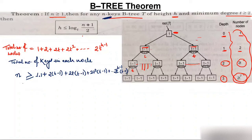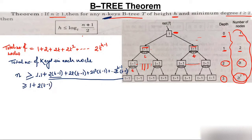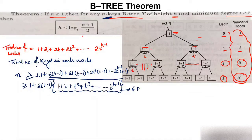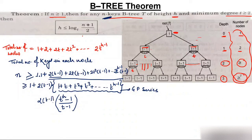This total number of keys is always less than or equal to n, because we are considering t−1 as the minimum number of elements per node, and n could be anything equal to or greater than this minimum. Taking (t−1) common from the series gives: 1 + (t−1)·[1 + t + t² + t³ + ... + t^(h−1)]. The bracketed part is a GP series with formula (t^h − 1)/(t−1).